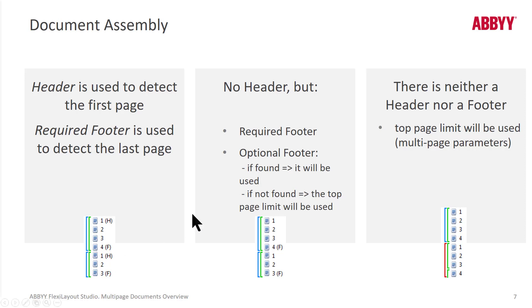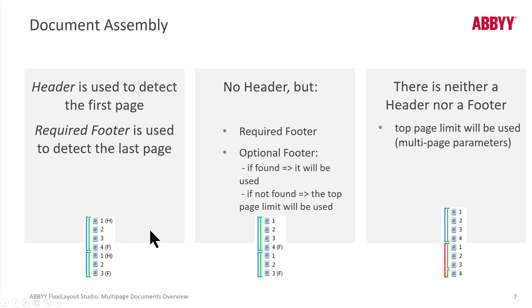We can turn off header support or footer support, and the algorithm changes accordingly. If we turn off footers, we disable or delete the footer group, and then the algorithm treats every new header encounter as a page division.